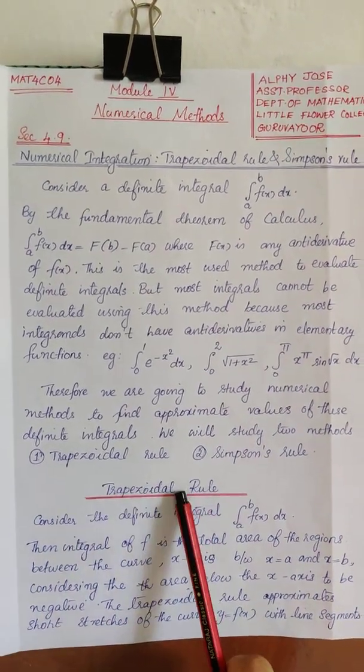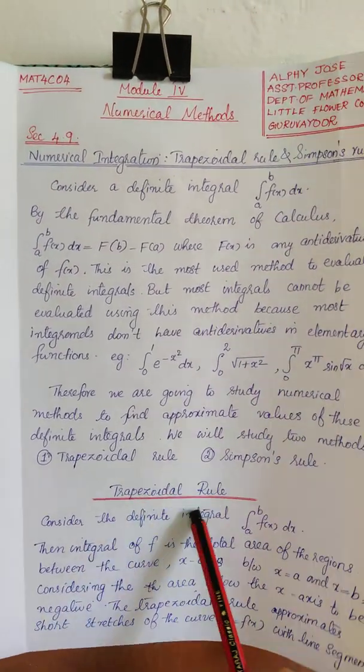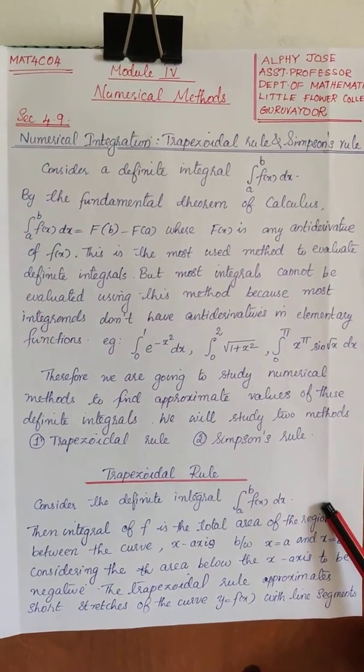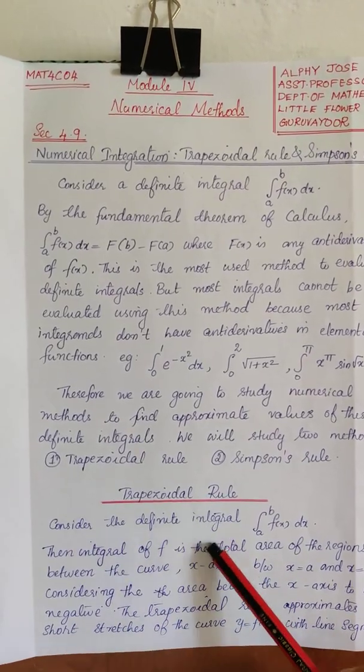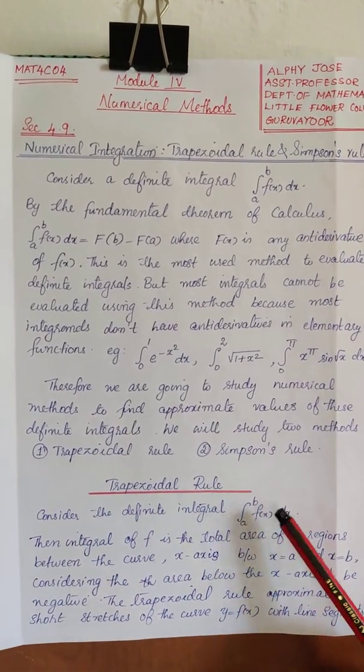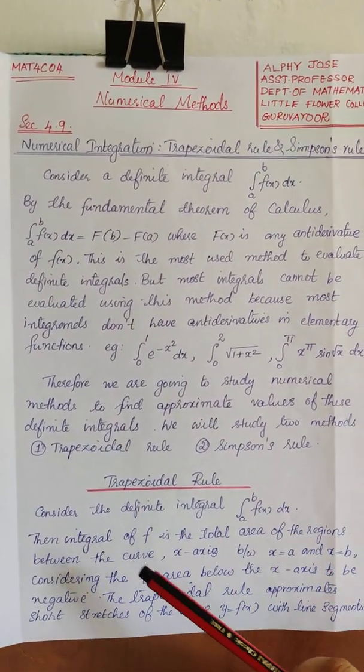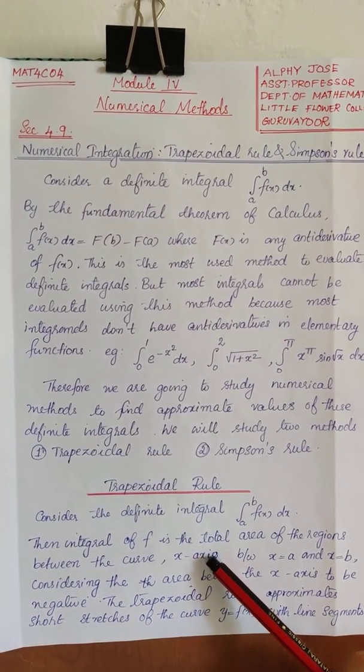Come to trapezoidal rule. Consider the definite integral integral a to b f of x dx. As we all know, the integral of f from a to b is the total area of the region between the curve and x-axis.